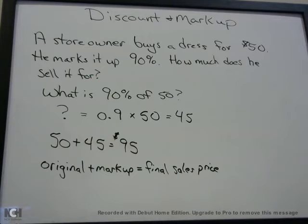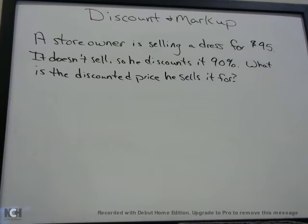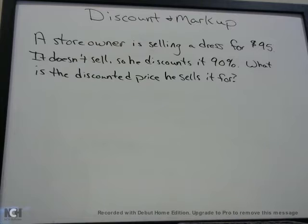Now here's a similar problem, but we're talking about discounts. A store owner is selling a dress for $95. It doesn't sell, so he discounts it by 90% — in other words, he puts it on sale. What is the discounted price that he sells it for? I used the same numbers as the first problem to show you that these are very different questions.